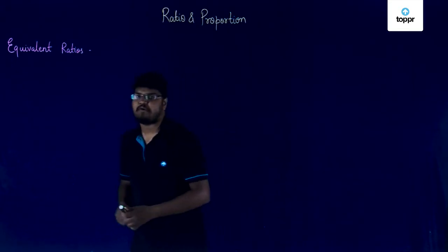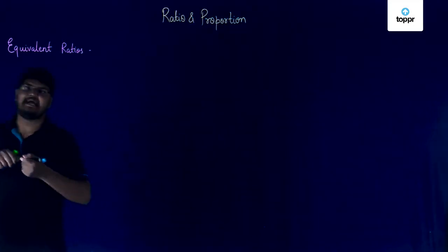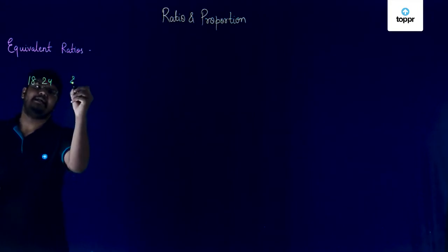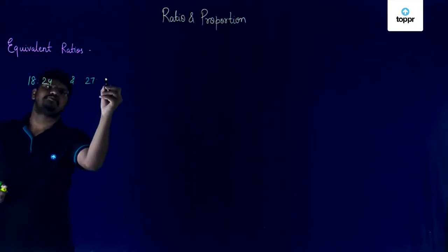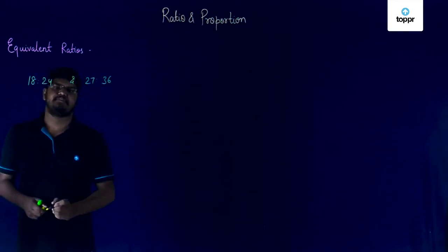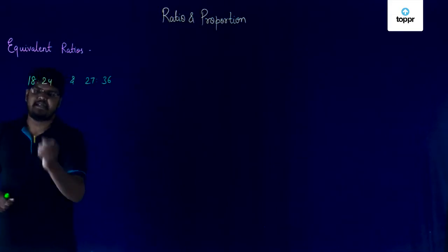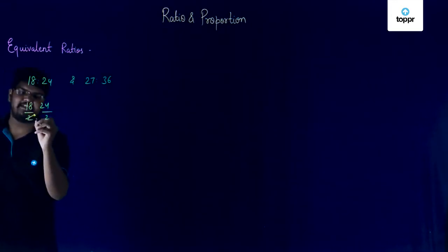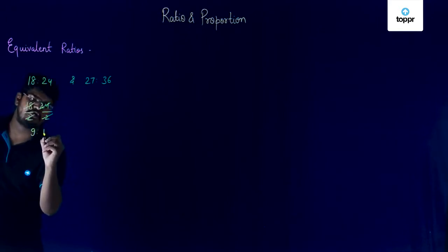Let us now take two different quantities and compare them. Let's say I have 18 is to 24 and 27 is to 36. Now, if we compare 18 is to 24, this further simplifies because 2 is a common factor between them and so it becomes 9 is to 12.